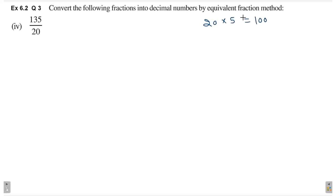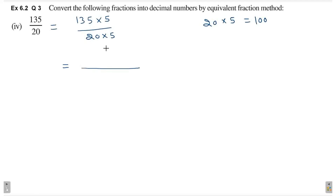Fourth part hai 135 by 20. So, 20 ko 5 se multiply karke we will get 100. So, we will multiply numerator and denominator by 5. 135 into 5 divided by 20 into 5. This is equal to: 5 5s are 25, 2 carry; 5 3s are 15 plus 2, 17, 1 carry; 5 1s are 5 plus 1, 6. So, yeh aajayega 675. Denominator me kya aajayega? 100.